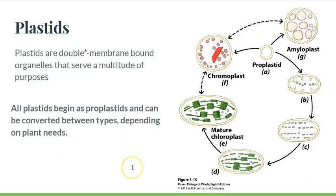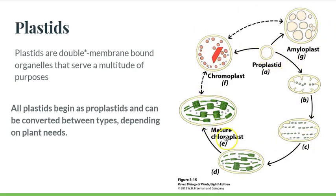Plastids can convert between different forms — a chloroplast could be converted into a chromoplast, which could be converted into an amyloplast, and any of these can move back and forth between each other. So you could just form amyloplasts, just form chromoplasts, or form chloroplasts that convert into the other types. I'll stop here and continue on with our plant cell components in the next video.